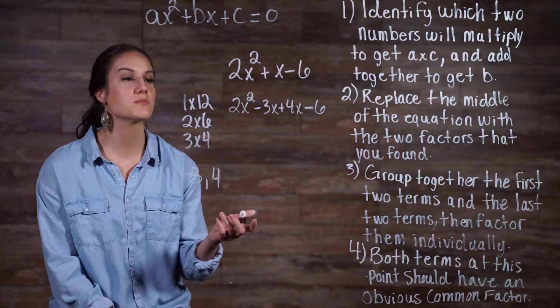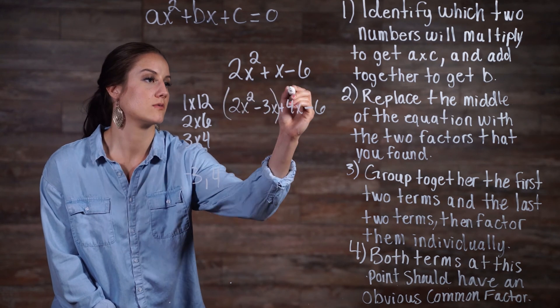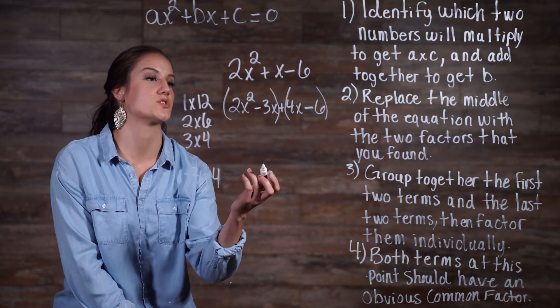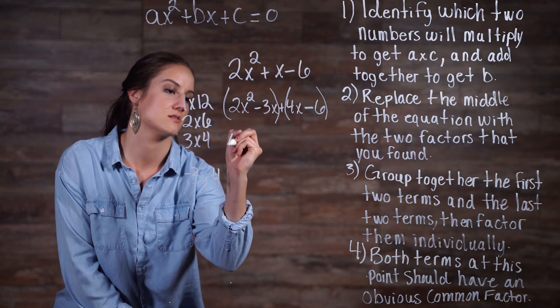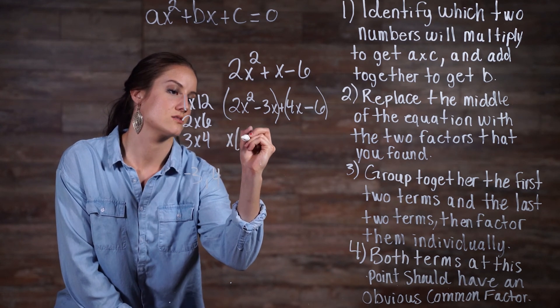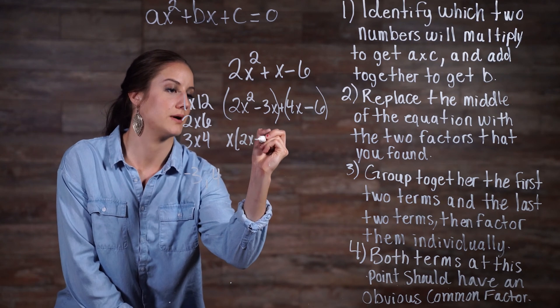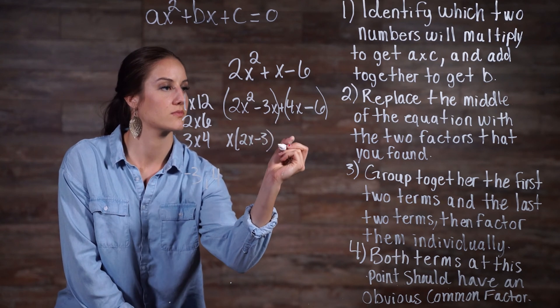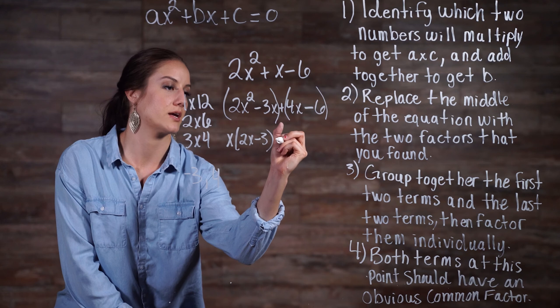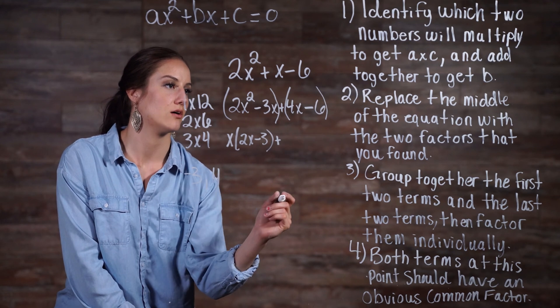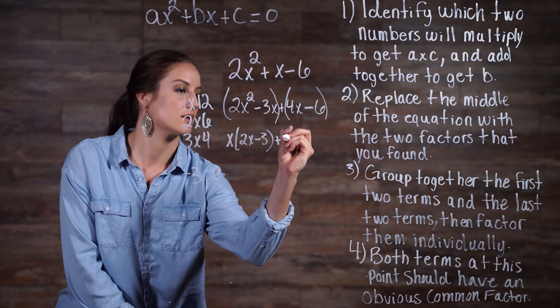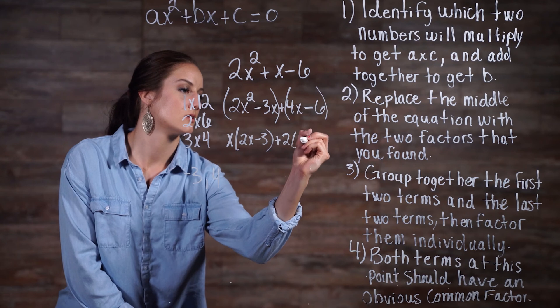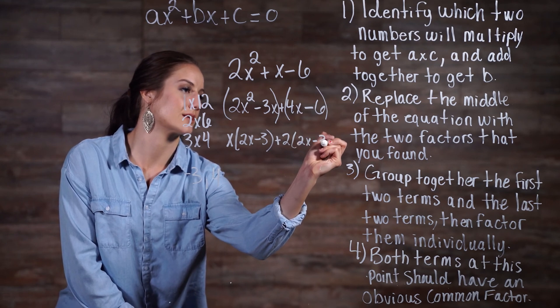So we would group them together like this. Then we would just factor. So from our first two terms, we can factor out an x, giving us x times 2x minus 3. And from our second group, we can factor out a 2, giving us 2 times 2x minus 3.